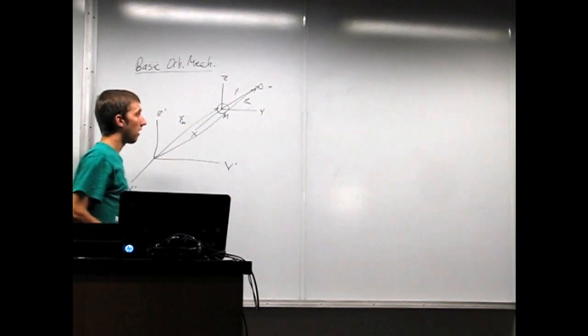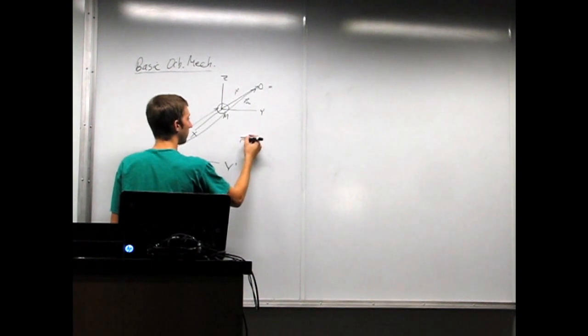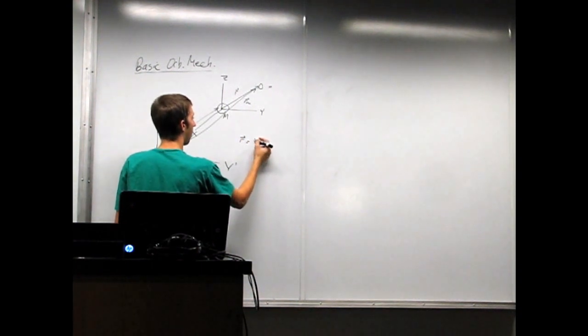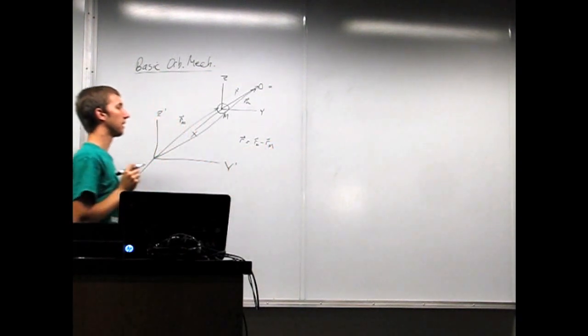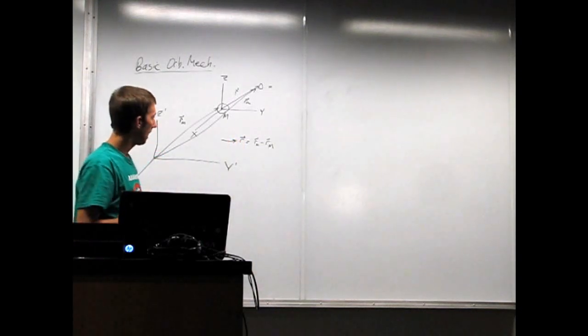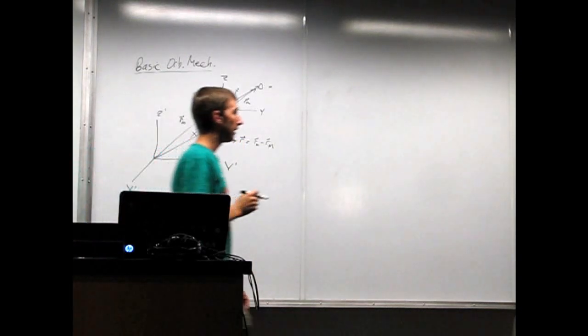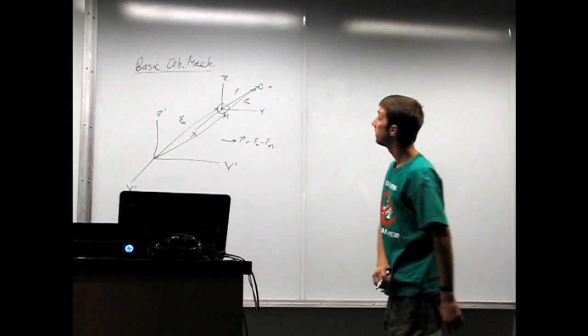And to get just plain old R, which is what we want, we use vector subtraction, so R little m minus R big M. So, there's our relationship. I hope you can see it. I don't know if I'm writing too small.